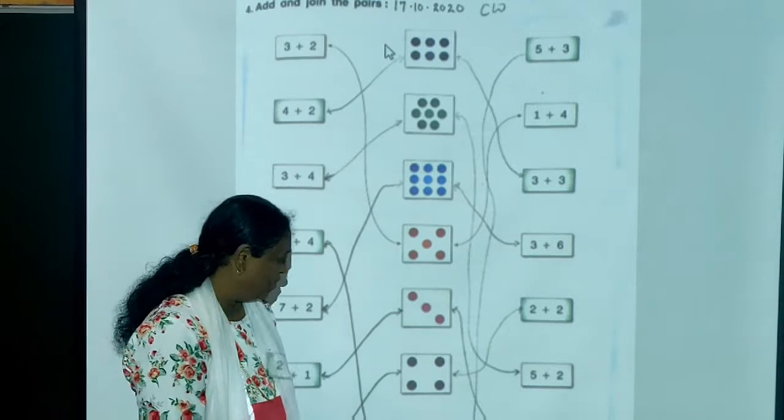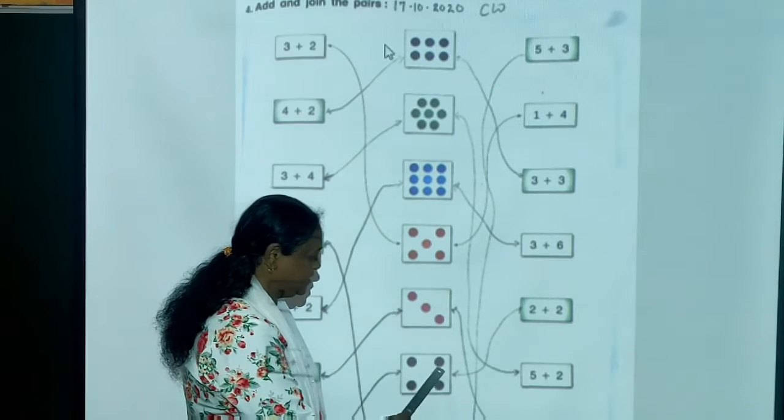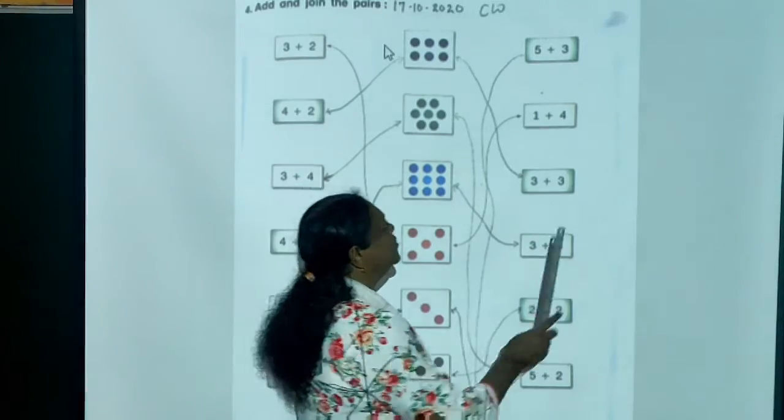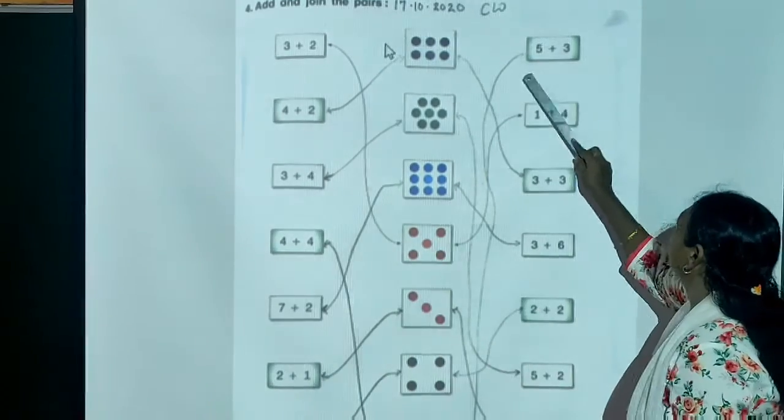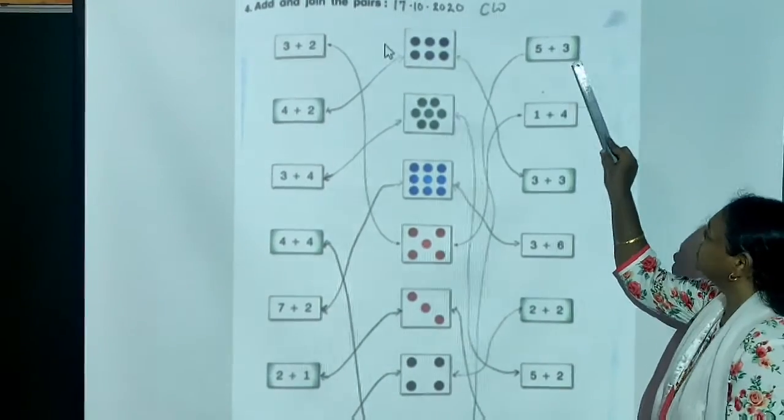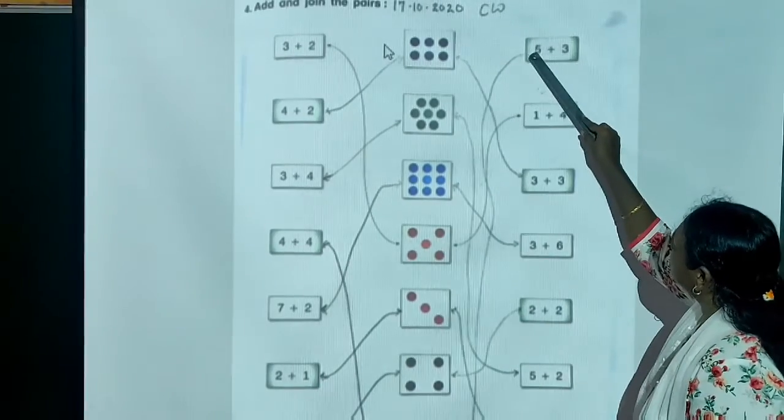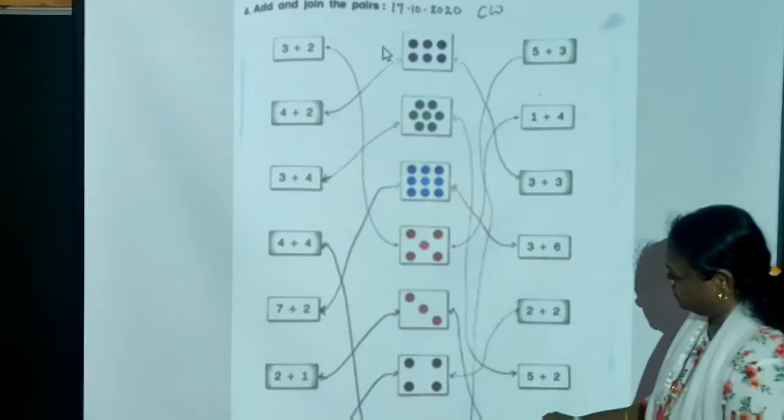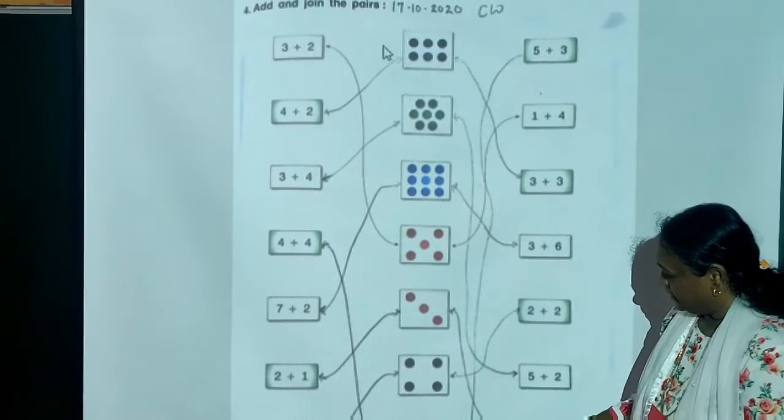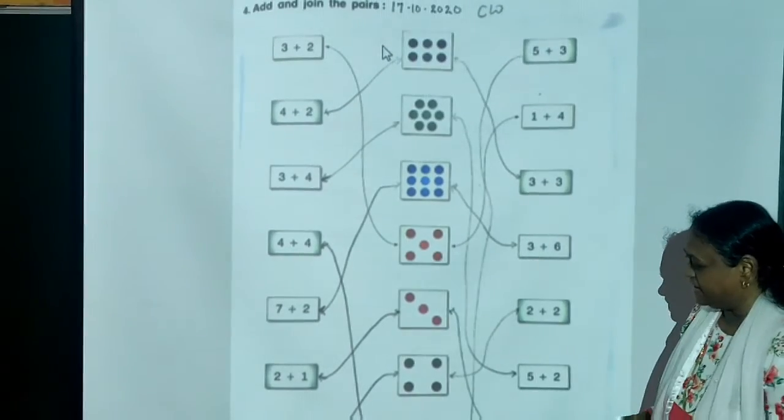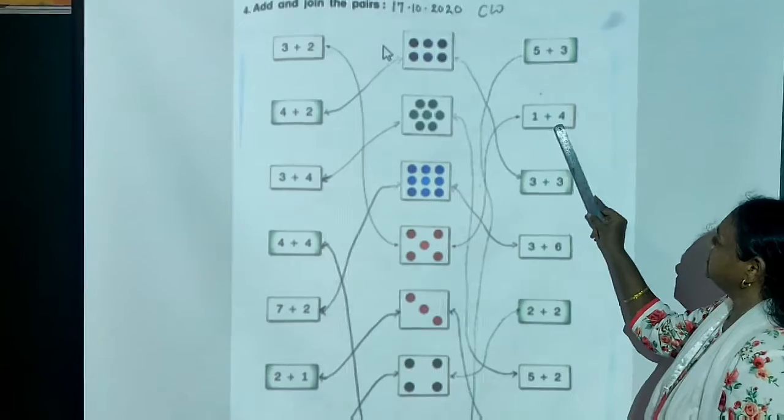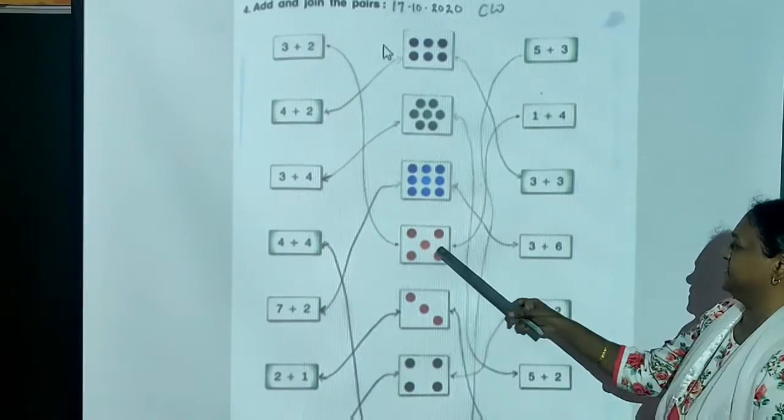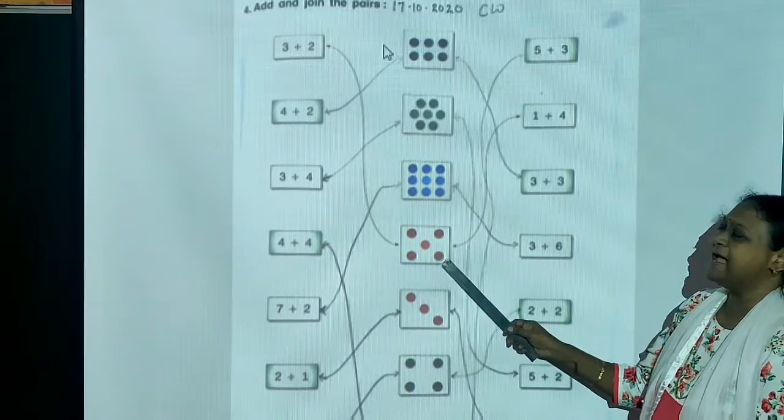3 plus 1 equals 4. So, where is 4? Count 1, 2, 3, 4. You match it. Now, this time, you have to count again. 5 plus 3 equals 8. So you have to see where 8 is. Here we can. So please see from here. It goes like this and comes here. Count 1, 2, 3, 4, 5, 6, 7 and 8.